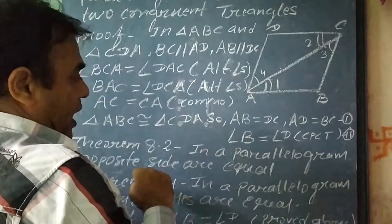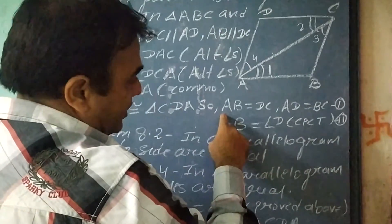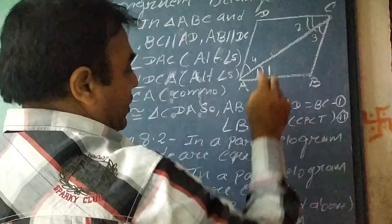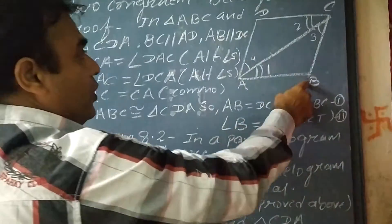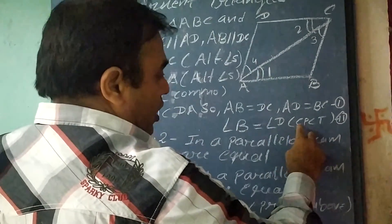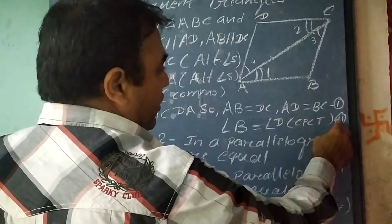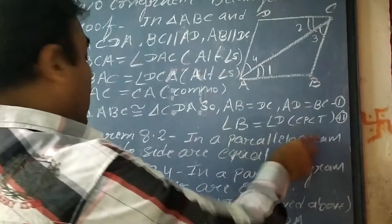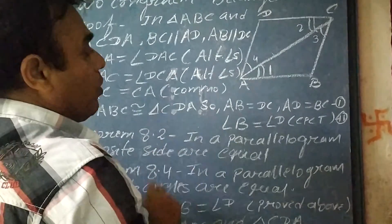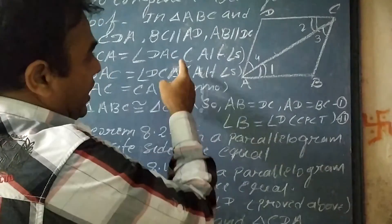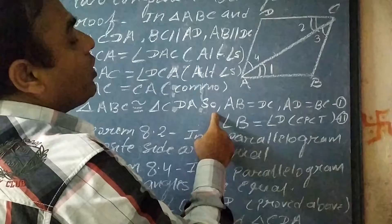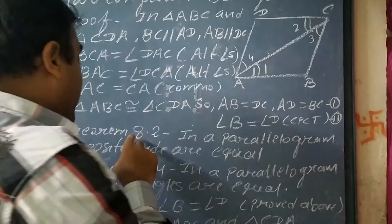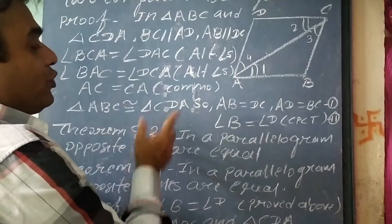If these two triangles are congruent, then their corresponding parts are equal. That is AB equals DC, and AD equals BC, and angle B equals angle D. So these are the corresponding parts of congruent triangles. Now theorem 8.2: in a parallelogram, opposite sides are equal. As we have proved, the corresponding parts give us AB equals DC and AD equals BC. So theorem 8.2 is also proved.